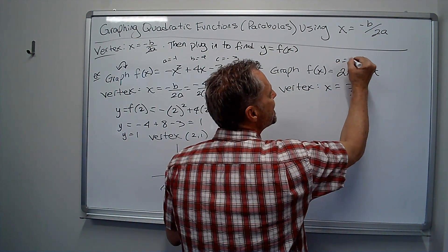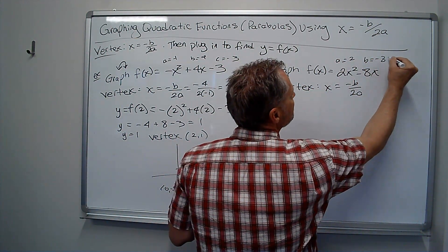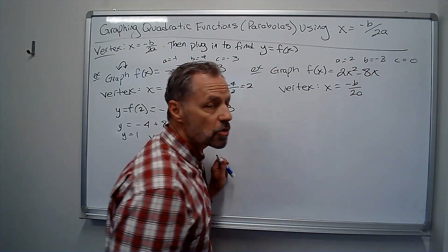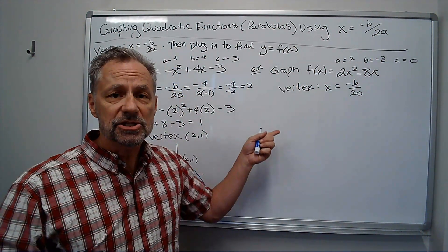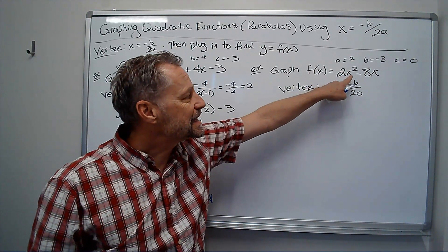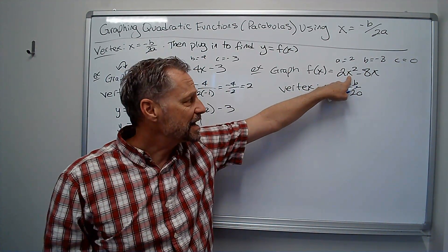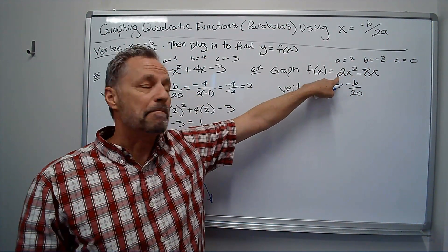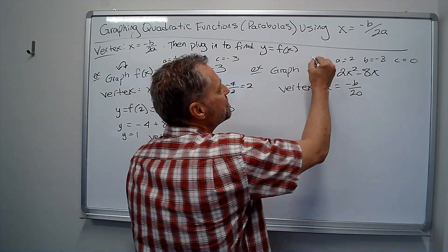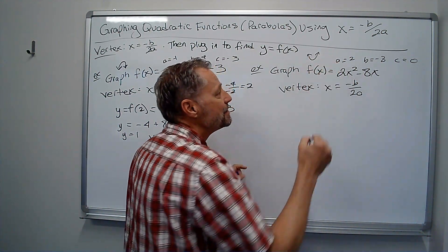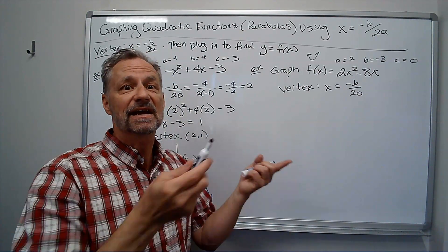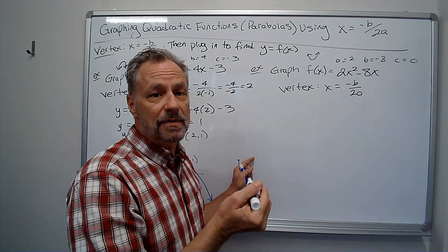This time, a is 2, b is negative 8, c is 0 because there's no constant term. And now I just plug things in. Remember again, it's a parabola because x squared is my highest term. It's a positive 2 in front, so this time the graph opens up. That's what I'm expecting to happen. If it doesn't match what's happening, then we know we did something wrong.